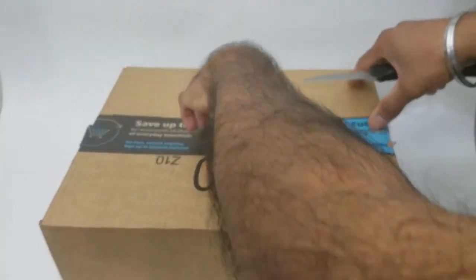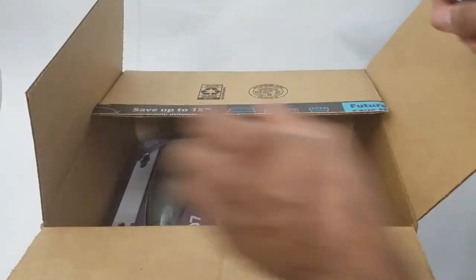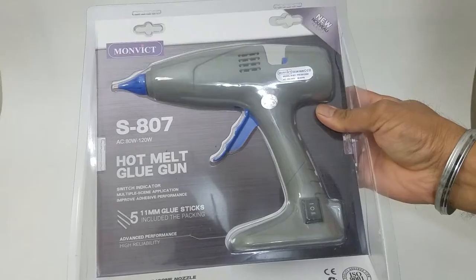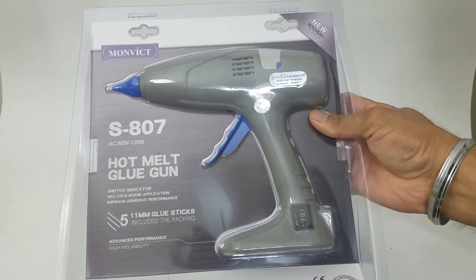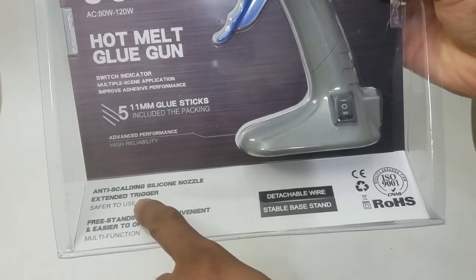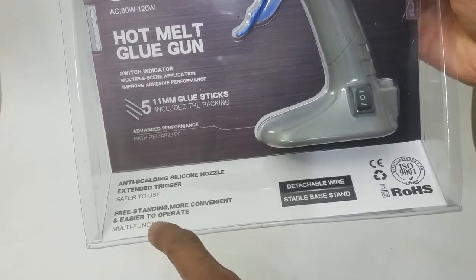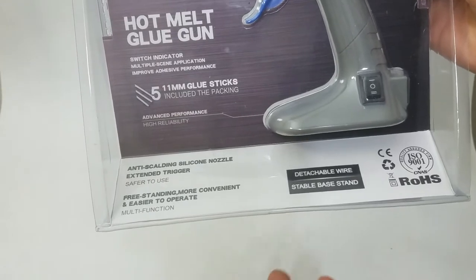That item being an S208 hot melt glue gun. This is anti-scaling silicon nozzle, extended trigger, freestanding, so you don't have to worry about where you want to put the thing.